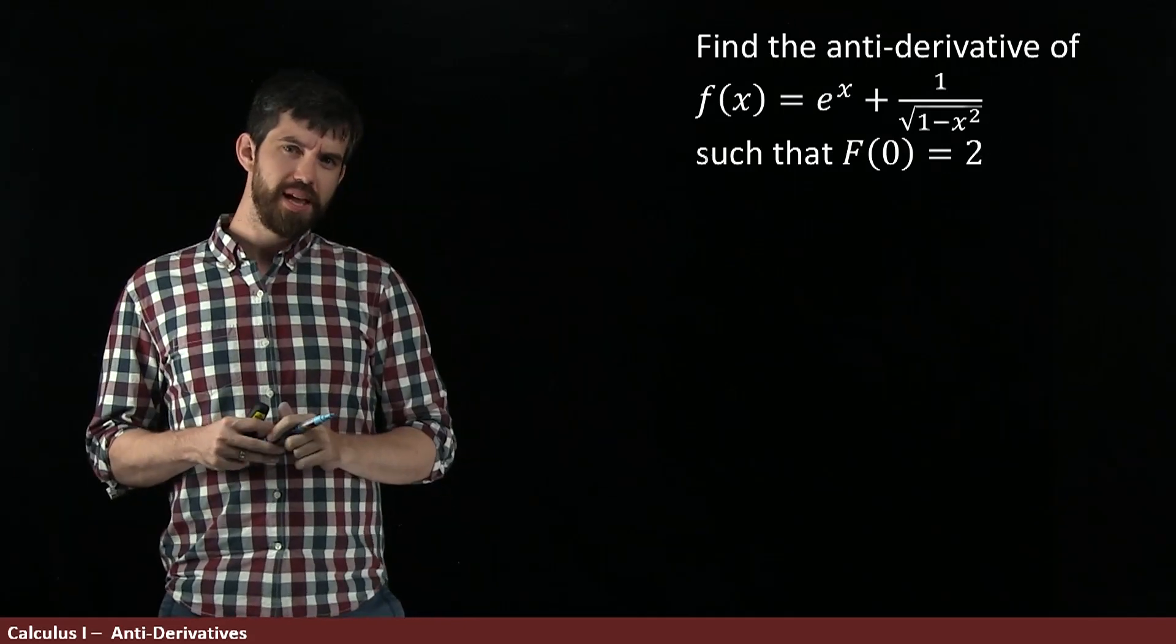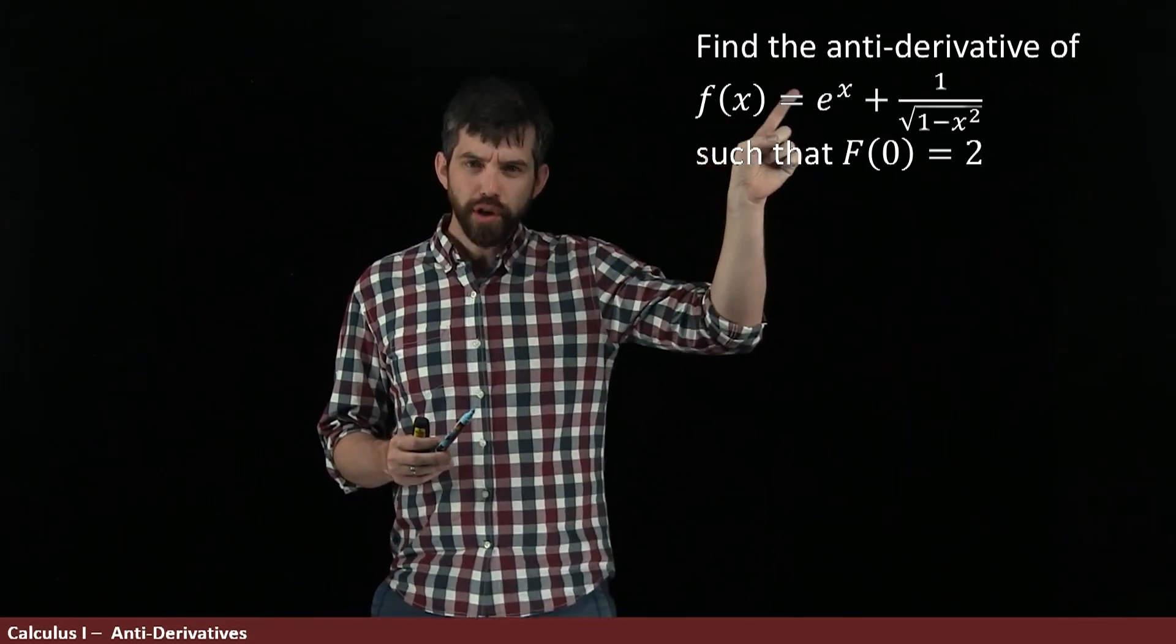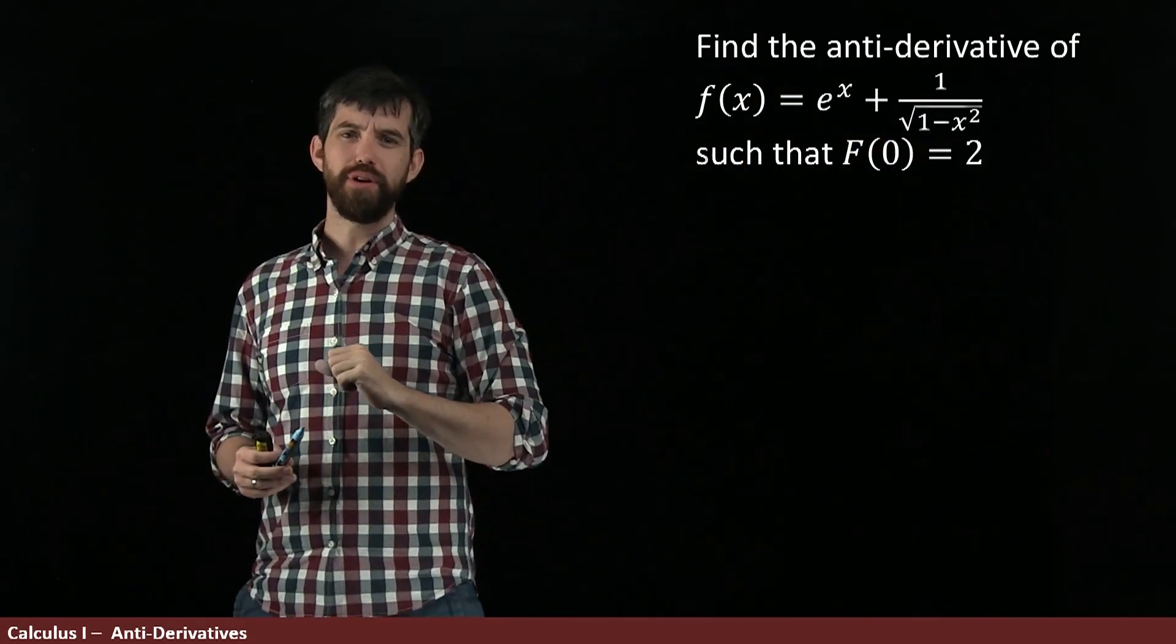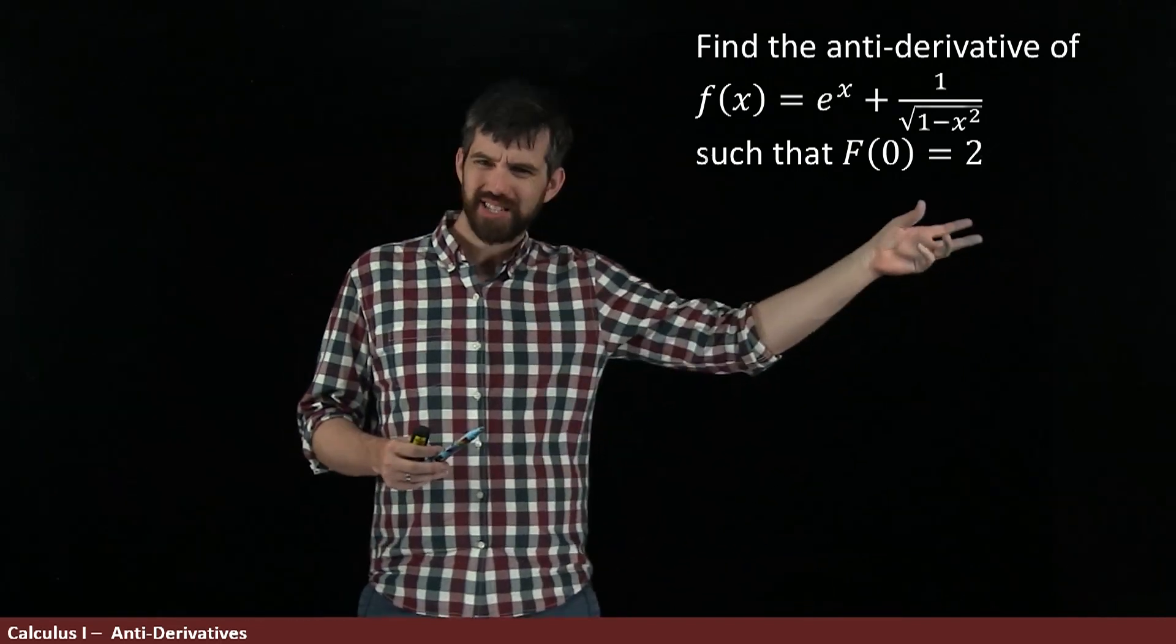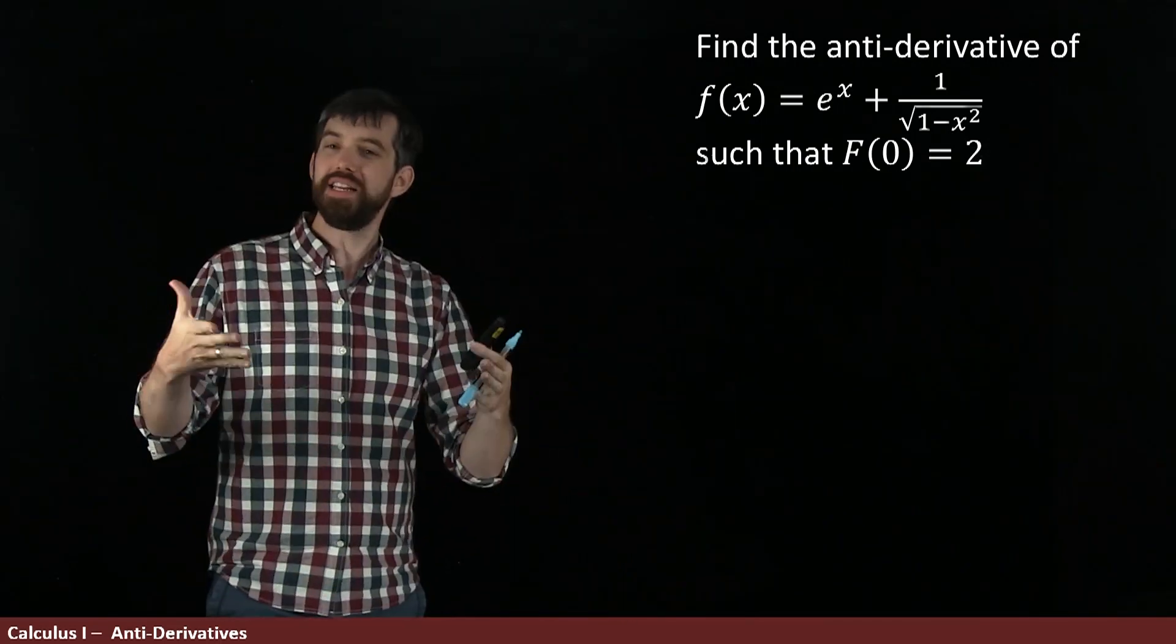This problem is a little bit interesting. I'm asking not for an antiderivative, but for the antiderivative of this function that has the property that F(0) equals 2. The idea here is this.